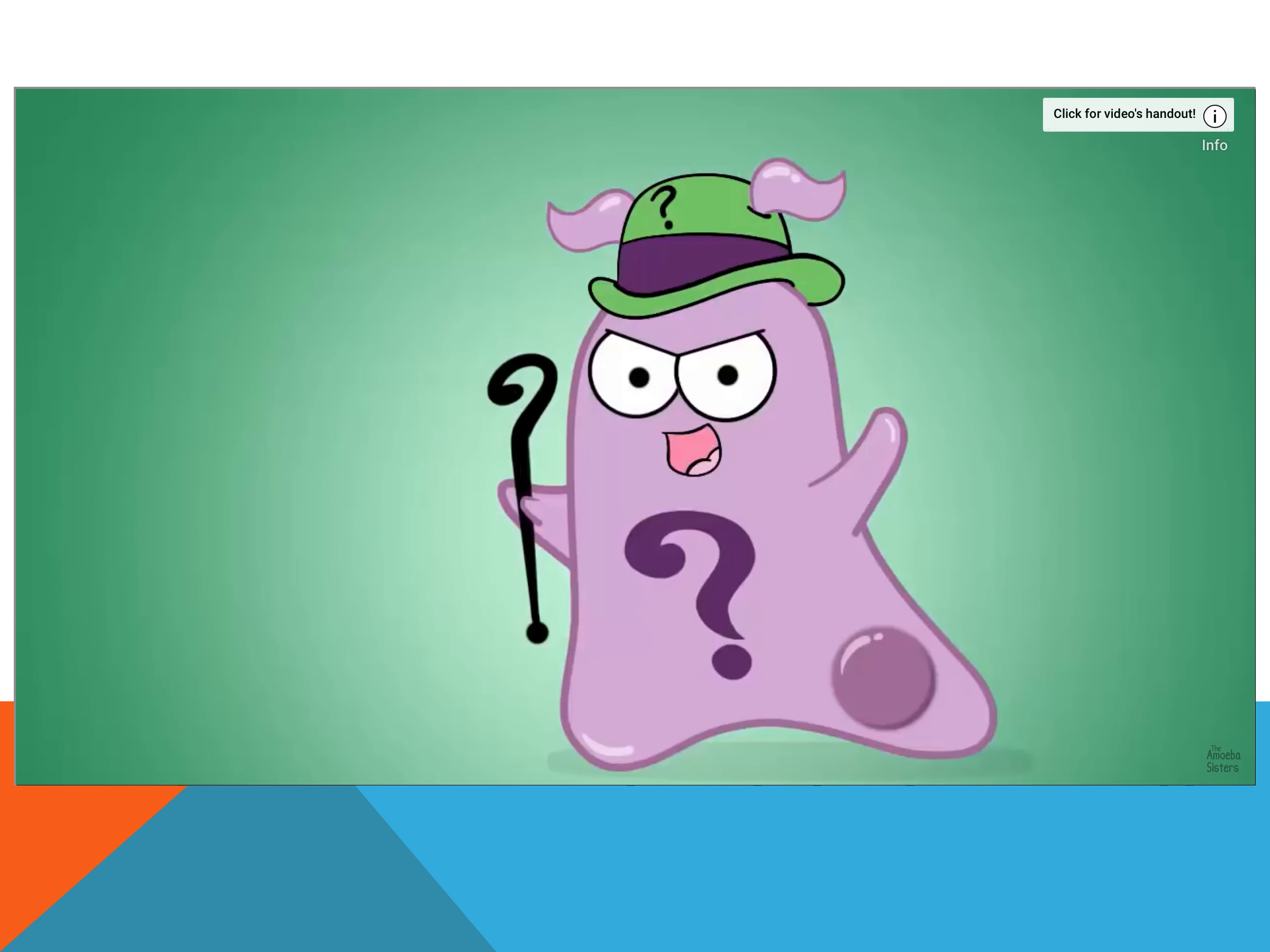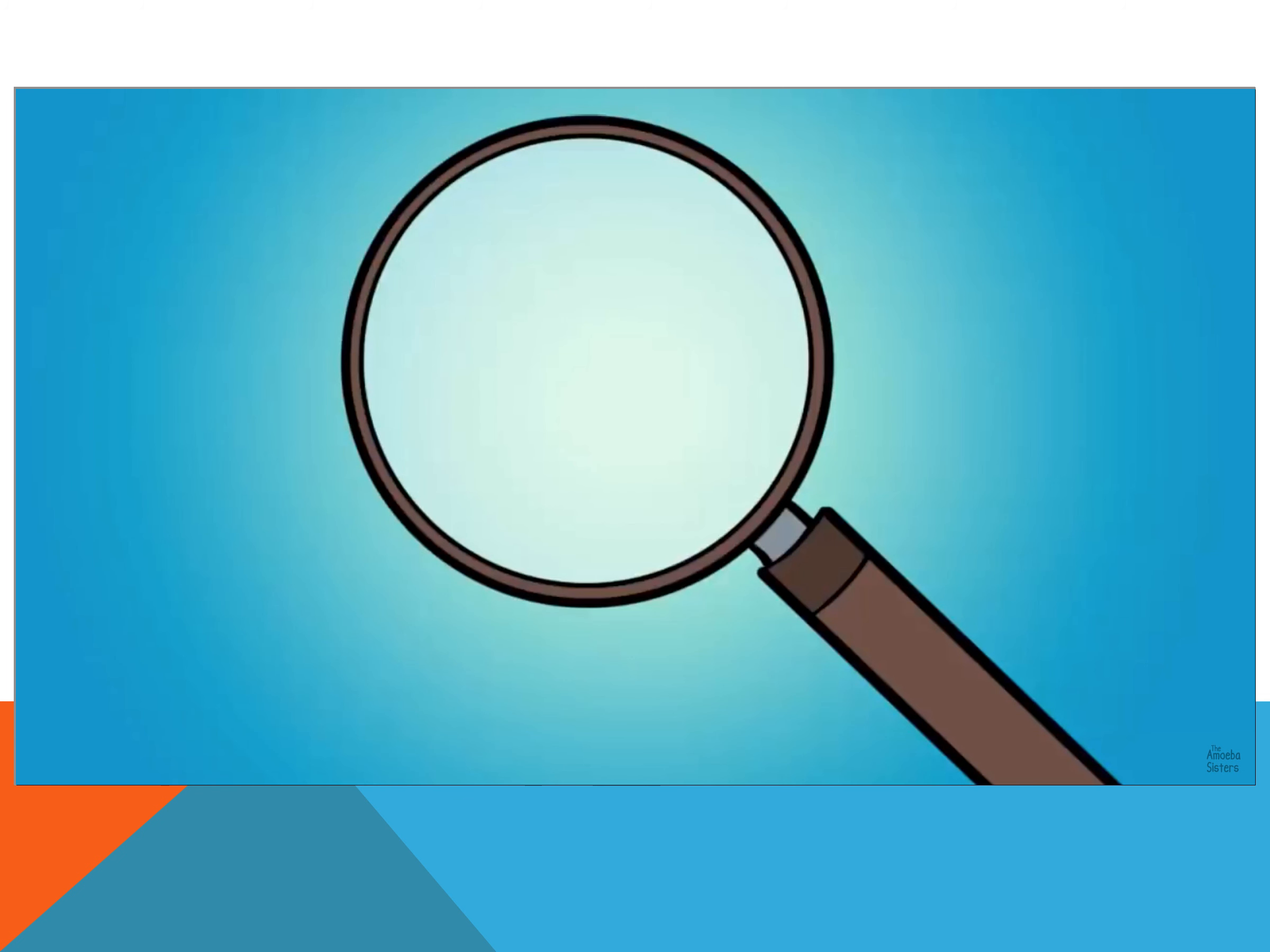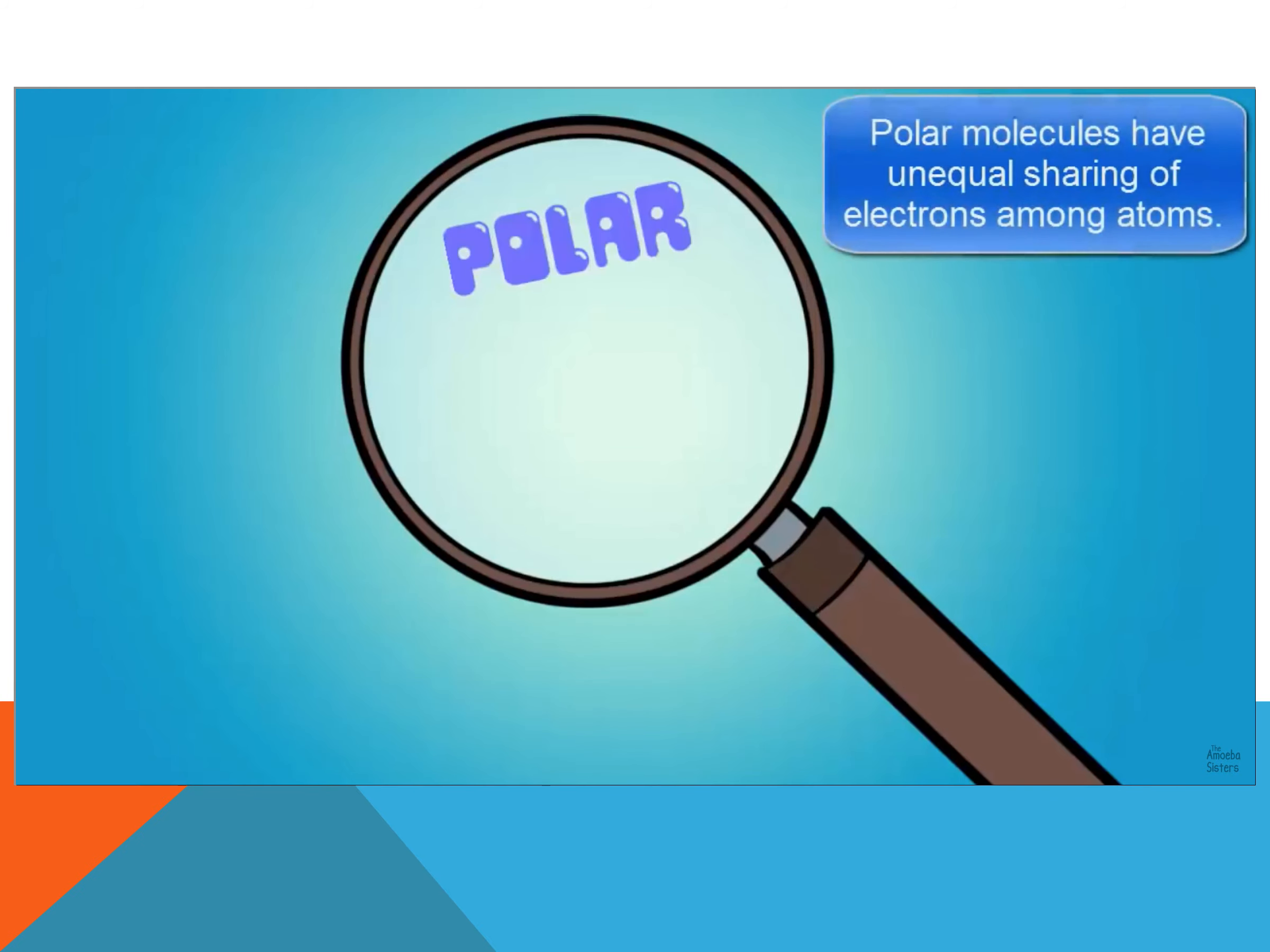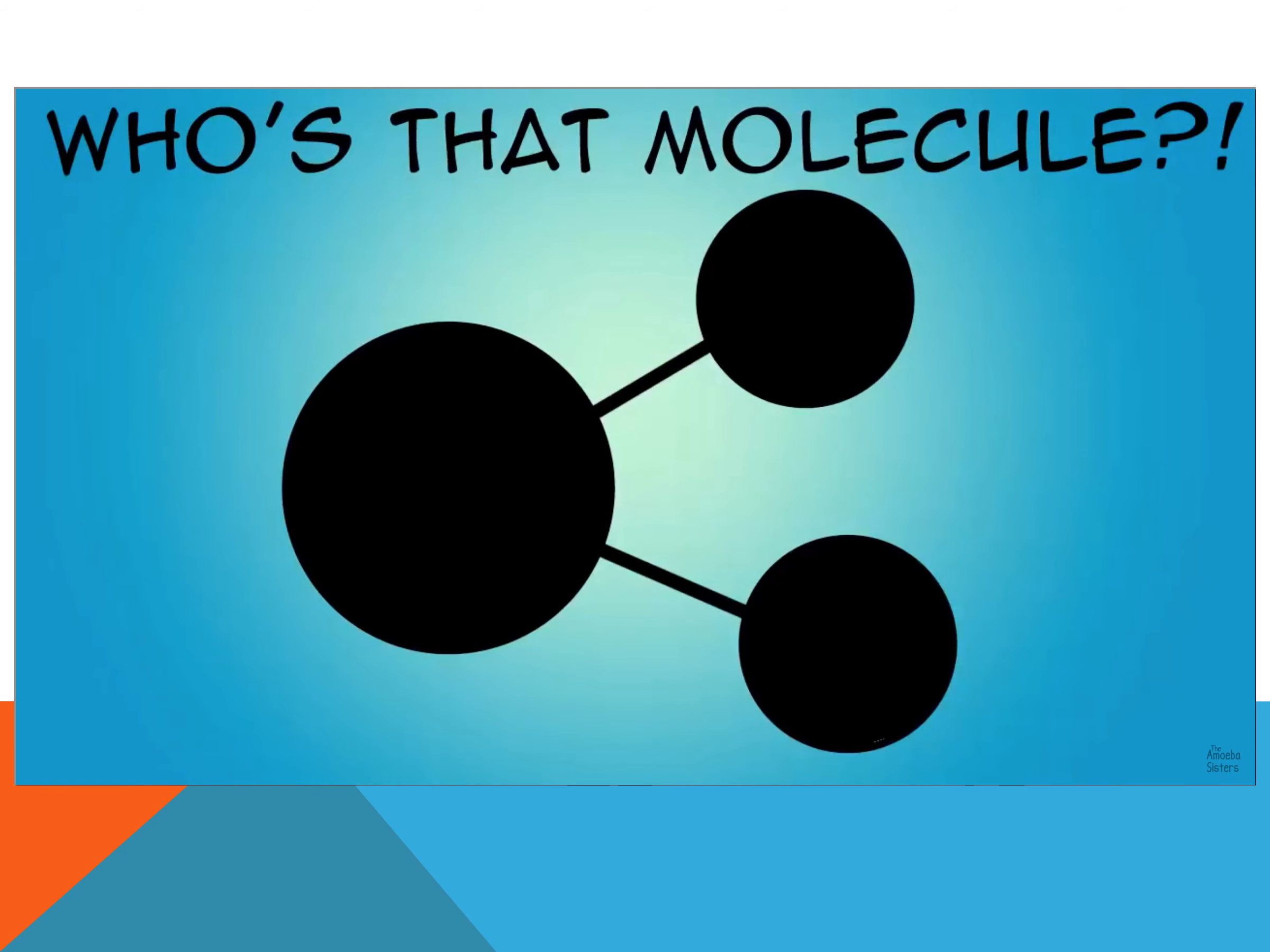So we have a riddle for you. Not really a riddle. We're bad at riddles, but more like clues about our favorite molecule. It's polar. It's shaped like an outstretched V. Its properties are awesome. And it makes up three-fourths of the surface of the Earth. That one always gives it away. Our favorite molecule is water.